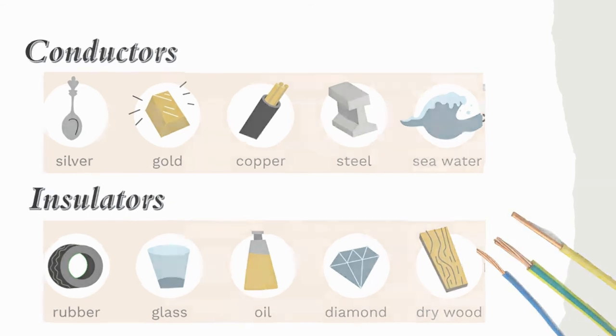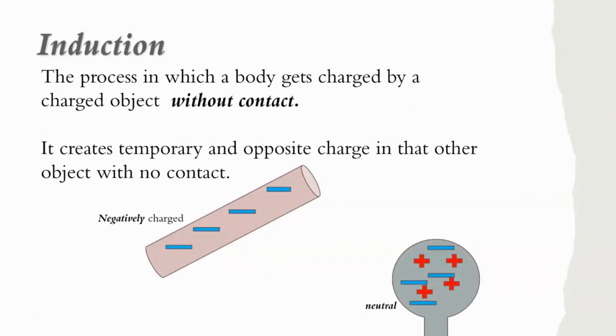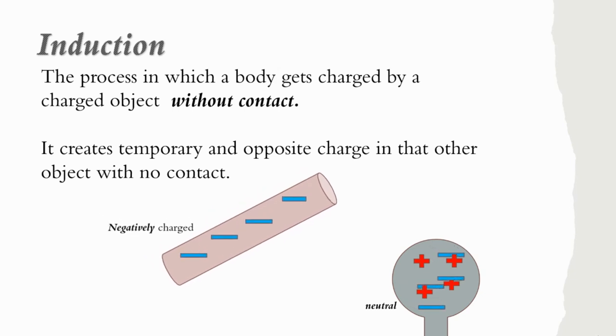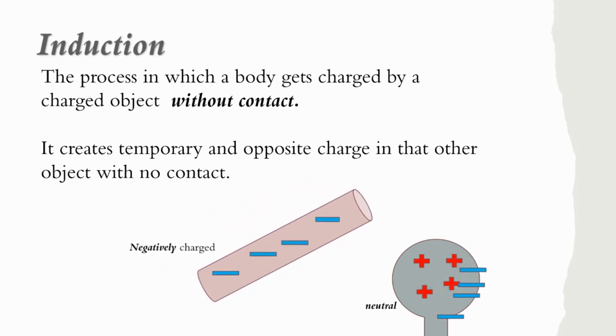And the third one is induction. It is the process in which body gets charged by a charged object without contact. For example, when I move this negatively charged pipe closer to the neutral charge ball, the negative charge in the ball are moving away and makes the front side of the ball positively charged. And like what I've said, this can only happen temporarily because the negative charges did not transfer from one object to another.